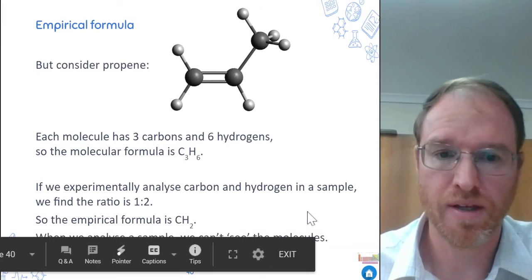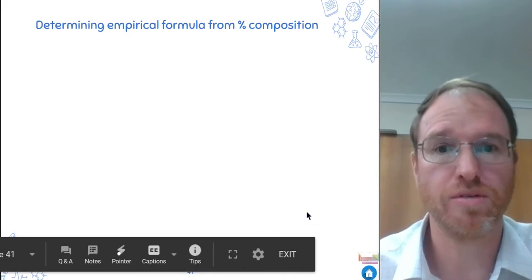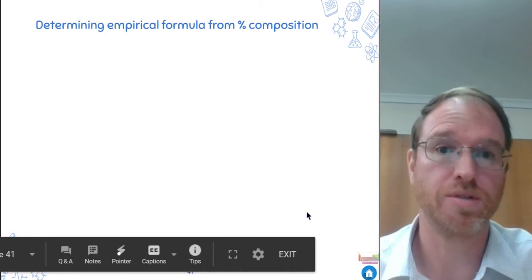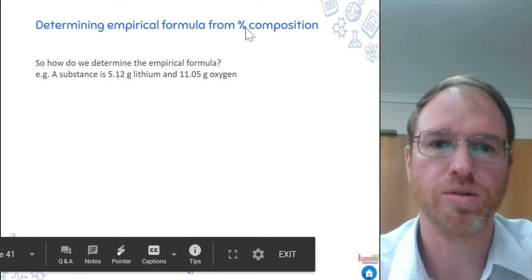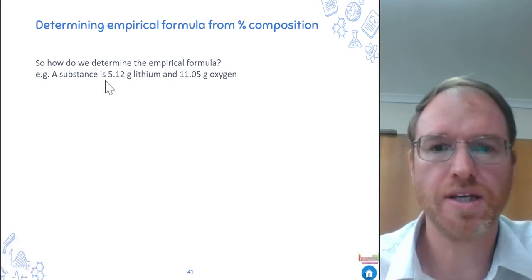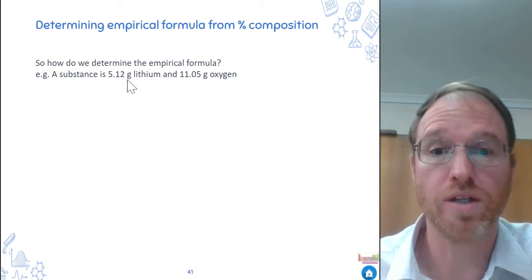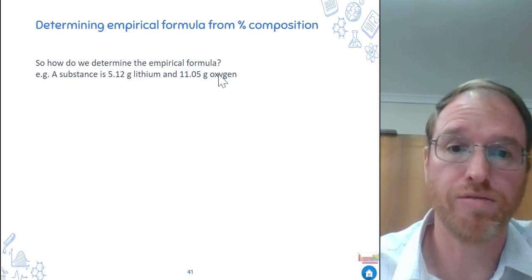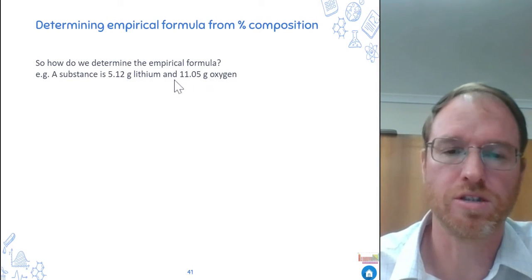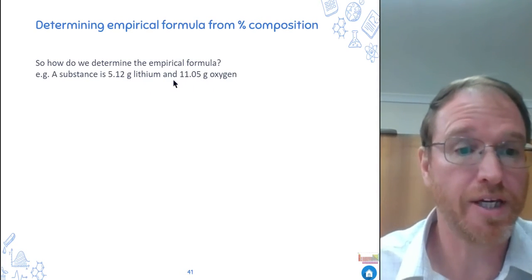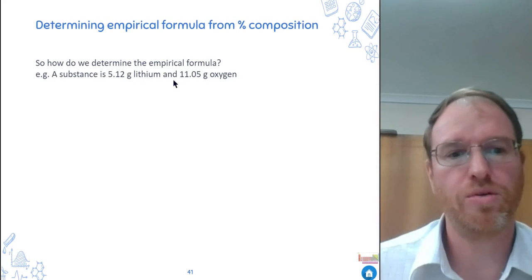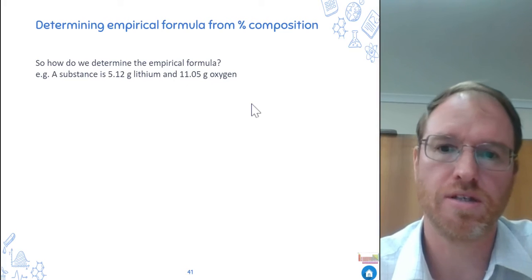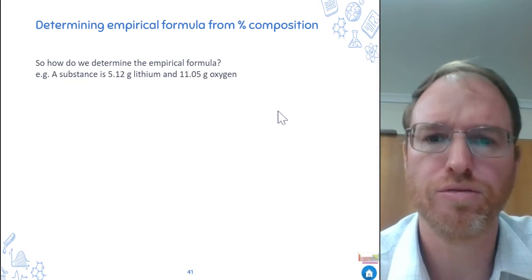So if you've got your data and you're trying to work out the empirical formula from your percentage composition, what do you do? Let's say we've analyzed it. We won't do from percentage, we'll do from mass, but it's the same. Let's say we've got a substance that's 5.12 grams of lithium and 11.05 grams of oxygen. This is lithium oxide. And we worked out that by experiment. We took our lithium oxide, we broke it up somehow. We know the mass of each thing that was in the sample. How do we work out the empirical formula?